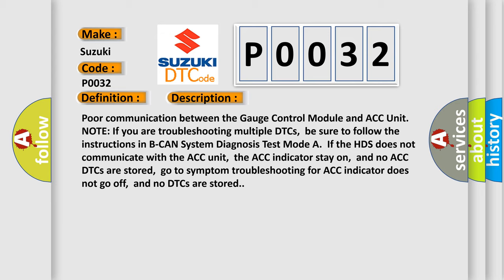Note: if you are troubleshooting multiple DTCs, be sure to follow the instructions in Peak Hand System Diagnosis Test Mode. If the HDS does not communicate with the ACC unit, the ACC indicator stays on, and no ACC DTCs are stored. Go to Symptom Troubleshooting for ACC indicator does not go off and no DTCs are stored.